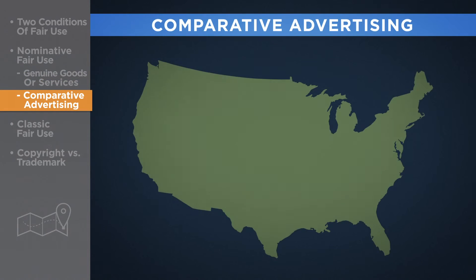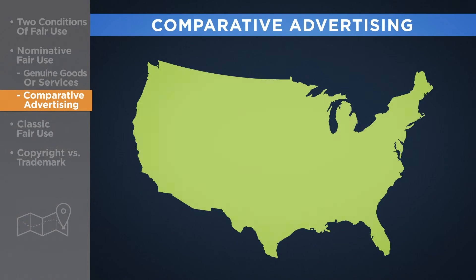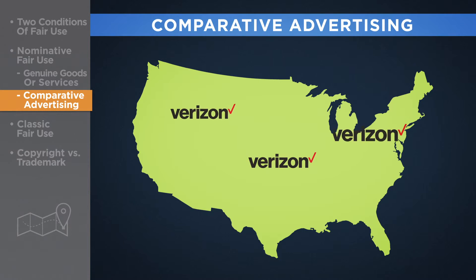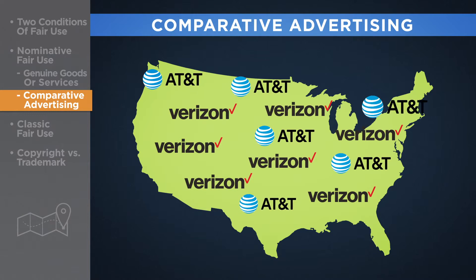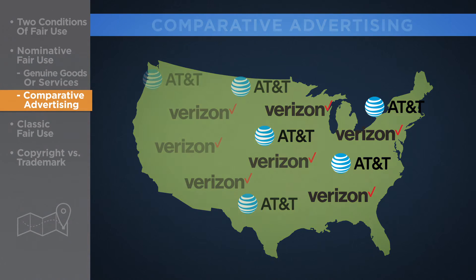Another example of nominative fair use is the use of a competitor's trademark in comparative advertising. When Verizon advertises that it has better coverage than AT&T, it is making nominative fair use of AT&T's mark because it is actually referring to AT&T's services.